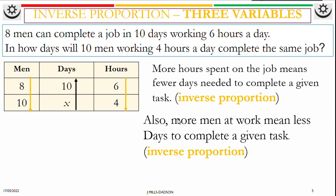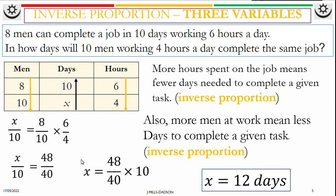Let's see days and men. Also, more men at work means less days to complete a given task. So with days it's going up, men should go down. Start the equation from x over 10. It should equal to, it's going down, so that should be 8 over 10. Times by, it's going down, 6 over 4. Then you work it out for x. This is 48 over 40. Multiply both sides by 10. Work it out. x is 12 days. So 10 men will take 12 days working 4 hours. So 10 men working 4 hours a day will take 12 days to complete a job.